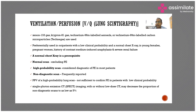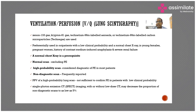In the VQ scan, xenon gas and krypton gas are given in ventilation. The ventilation scan is done first, then the perfusion scan, to see if there is a ventilation-perfusion mismatch. Ventilation scan is done with Xenon-133 and Krypton-81 gas, and the perfusion scan is done with Technetium-99 labelled aerosols, albumin, or carbon microparticles.